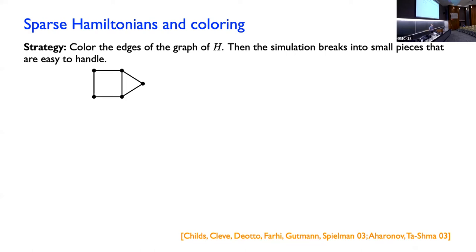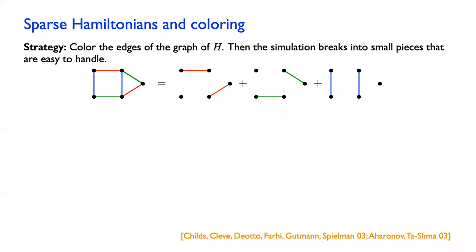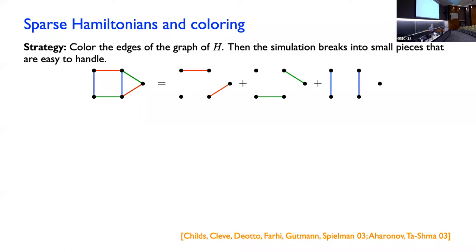Why is this useful? Imagine I have some graph here — just some five-vertex space. Now what I do is I find some way of assigning colors to the edges. Hopefully you can see that I have red, blue, and green edges. If I look at the subgraph I get by taking all the vertices but just the edges of a given color, then those subgraphs involve just isolated vertices and isolated edges. That's a property of an edge coloring — you can't have a path of length longer than one, because if you did that, you would violate the coloring constraint. So that breaks up the simulation into nice pieces, because I only have evolution within two-dimensional subspaces.